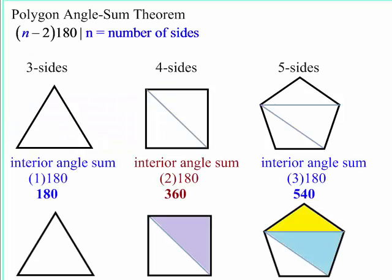So the polygon angle-sum theorem. The theorem itself is: if you take the number of sides, subtract 2 from that number, and multiply it by 180, that will tell you the sum of the interior angles.